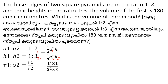The 1/3 terms cancel. Then a1² is 1² = 1 and h1 is 1; a2² is 2² = 4 and h2 is 3, giving 4 × 3 = 12. So V1 by V2 equals 1 by 12.